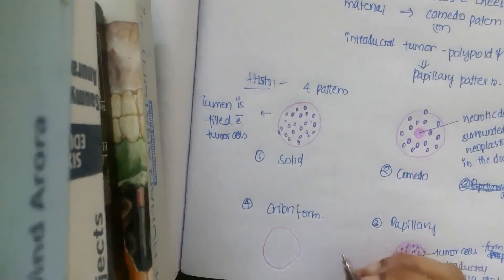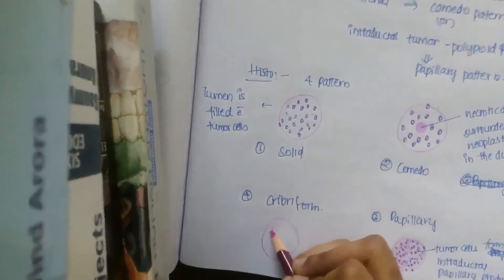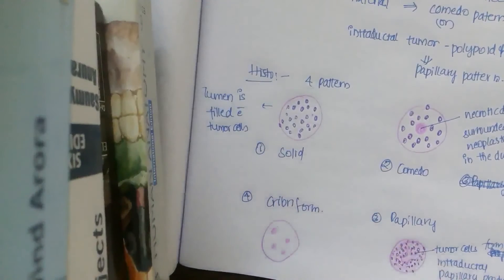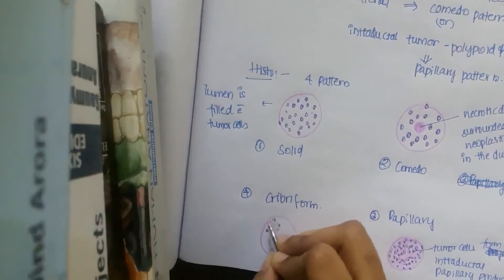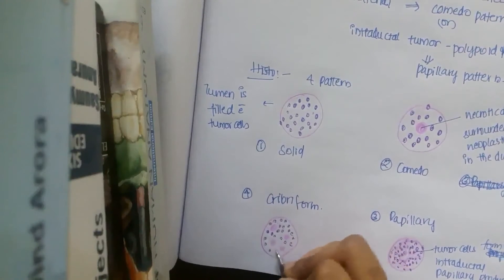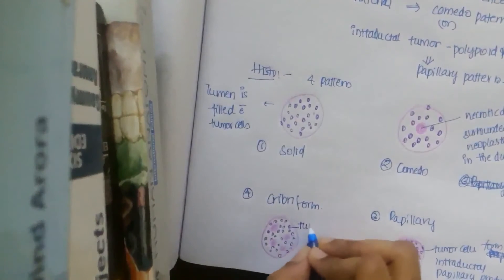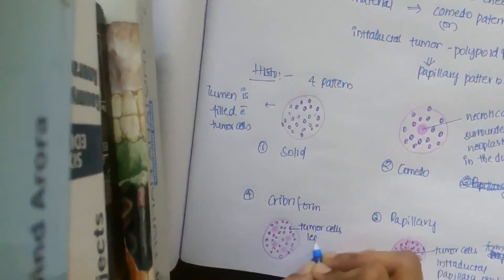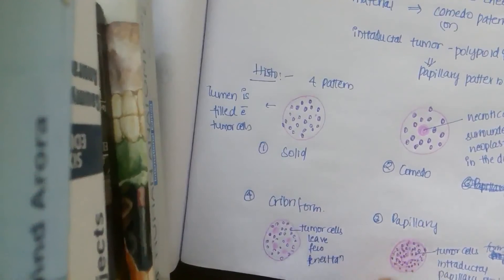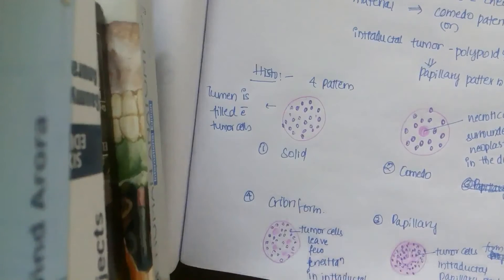In the cribriform pattern, the tumor cells leave small fenestrations within the duct. These fenestrations — small gaps left by the tumor cells — give the tissue a sieve-like or cribriform appearance.